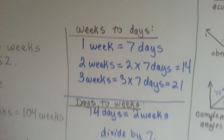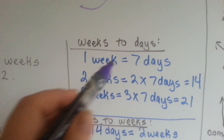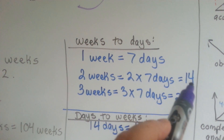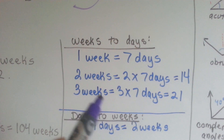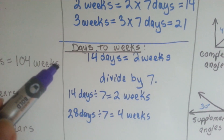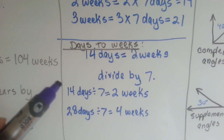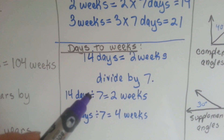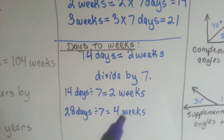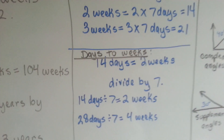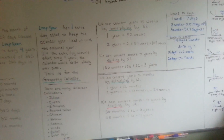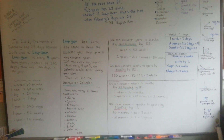We can do the same thing with weeks and days. One week is 7 days. So if we have 2 weeks, we multiply by 7 days and we get 14 days. 3 weeks would be 3 times 7 days — that's 21 days. And we can flip that around and do days to weeks: if you have 14 days, divide by 7, and we know it's 2 weeks. 28 days divided by 7 days of a week would be 4 weeks. So we can convert weeks and days back and forth, and weeks, months, and years back and forth.